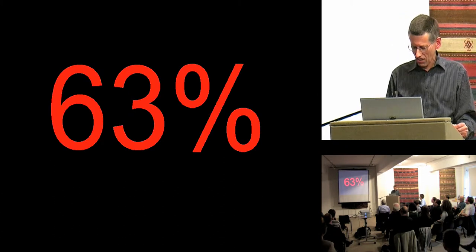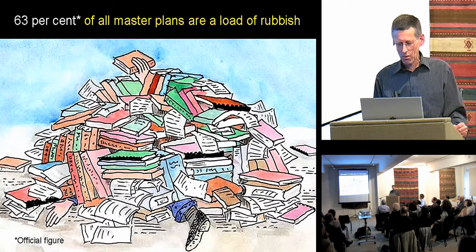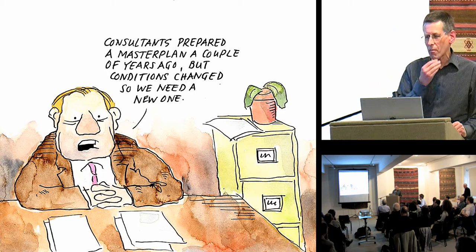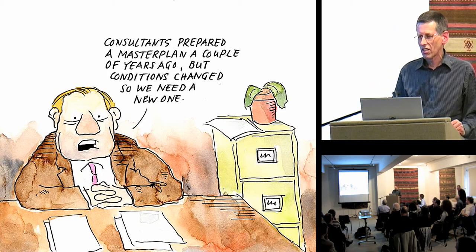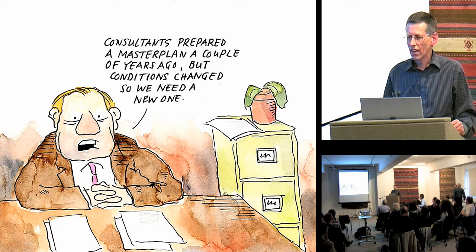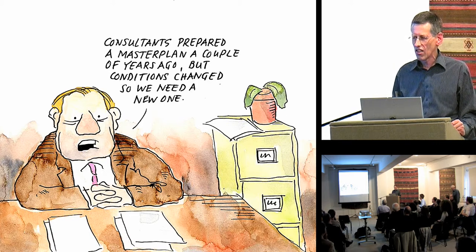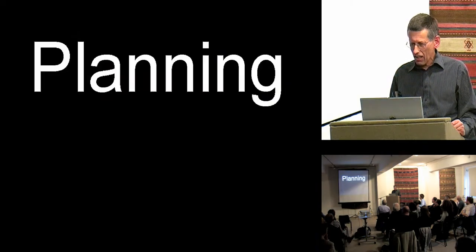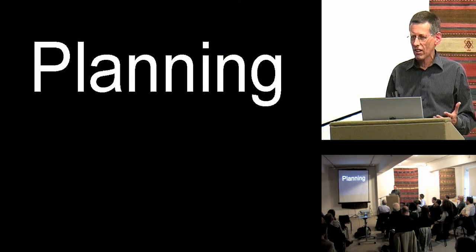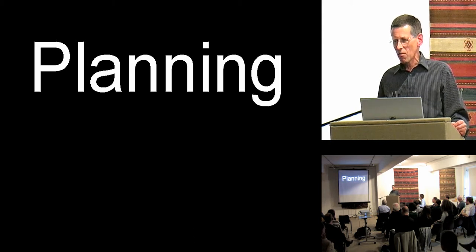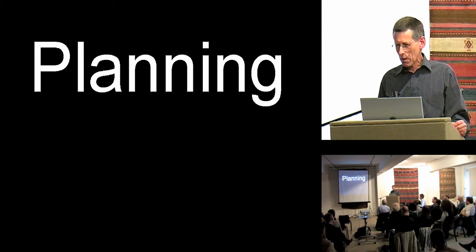Dodgy statistics — this is an official figure, actually: 63% of all master plans are a load of rubbish. Whenever I hear about a master plan, I always ask what happened to the previous master plan. And they always say, how did you know there's a previous master plan? But there always was a previous master plan, but conditions change, so they need a new one. That's the thing about conditions — they change. If they didn't, planning would be really easy, and it wouldn't need really clever people like us.